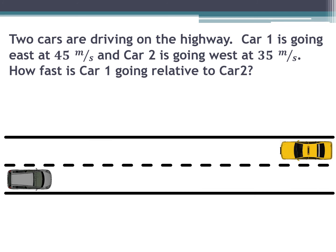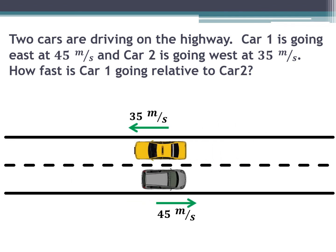In this example, two cars are driving on the highway. Car one is going east at 45 meters per second, and car two is going west at 35 meters per second. The question is how fast is car one moving relative to car two? If you've ever experienced a car coming toward you on the expressway, you realize it appears to move faster than if it were stationary — because the two velocities add together.